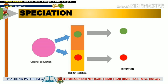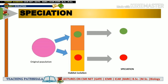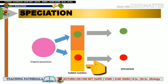Let's understand speciation with the help of a diagram. Suppose this pink circle represents the original population of a species. All of a sudden there is a habitat isolation — the single habitat has been divided into two habitats. Due to this, some species went to one part and some to the other. In these two different habitats they feed on different things, their characters differ slightly, and finally they emerge as distinctive species. This is called speciation — the factors may be environmental like habitat isolation, different characteristics, or other factors acting among them.